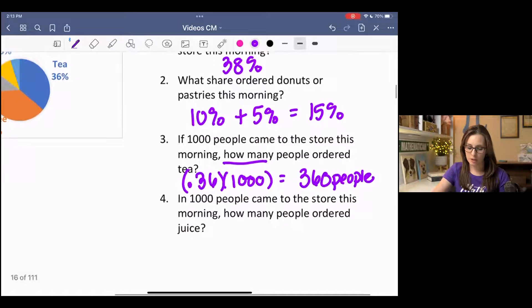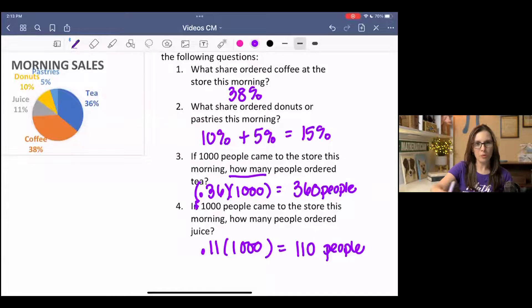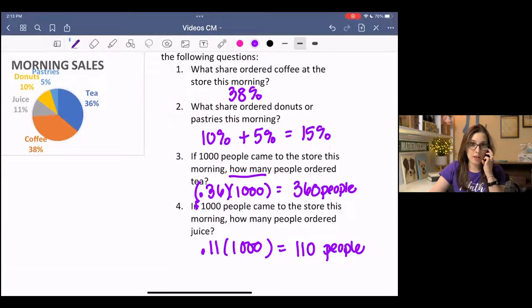And then the last one, if 1,000 people came to the store, how many people ordered juice? So I want you to try it. For that one, you should get 110 people. You're taking 11% and converting it to decimal. The way you do that is you just divide it by 100, if you aren't familiar, and multiplying it by 1,000 people.